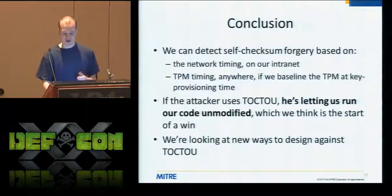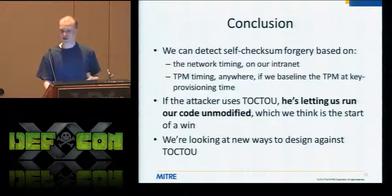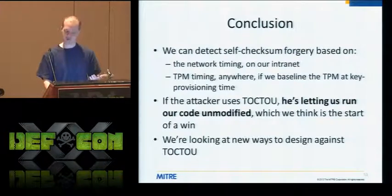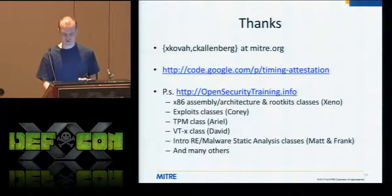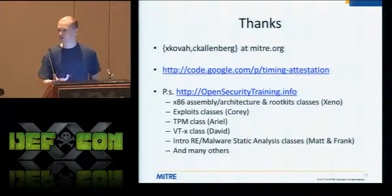In conclusion, we've shown a more practical system running on Windows XP and Windows 7 where we can detect if you're modifying our self-checking code — detected on the intranet based on round-trip time, and arbitrarily with TPM trusted-stopwatch timing if you baseline the time for the specific system. We know the attacker can get around it with TOCTOU attacks, but the key point is: when doing a TOCTOU attack, our code is unmodified. In the academic sense we've won, but we still want to find ways to mitigate TOCTOU attacks. The source code is available on Google Code, and we've put up videos rather than readme files showing exactly what to do to install the software, validate results, run it on your own machines, and tinker with the assembly code to see if you can make it go faster.